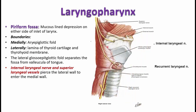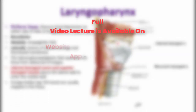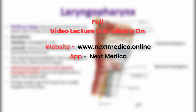In the lateral or external view, you can see the lamina of the thyroid cartilage and the thyrohyoid membrane extending between the hyoid bone and the thyroid cartilage. The thyrohyoid membrane is actually pierced by the internal laryngeal nerve. Once it is pierced, the nerve is inside the piriform recess.